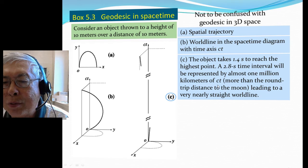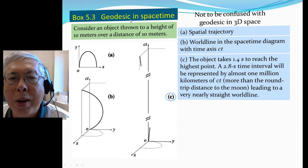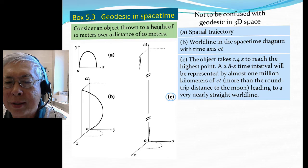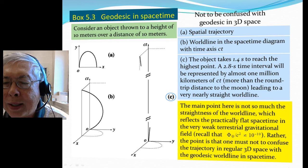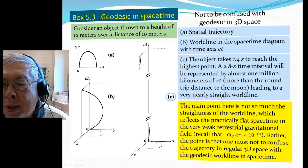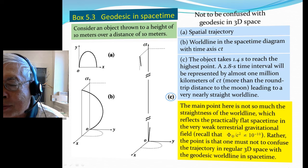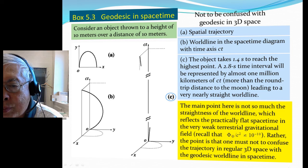That's more than the round-trip distance on Earth. So in the space-time diagram, this endpoint is way, way up there. When this is stretched out, the 10-meter horizontal distance becomes a very straight line — a straight geodesic. But the main point here is not so much the straightness of the worldline of the geodesic, which reflects the practically flat space-time in the very weak gravitational field of Earth — where the gravitational potential divided by c squared is about 10 to the minus 10. The point is that we must not confuse the trajectory in three-dimensional space with the worldline in space-time.